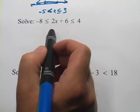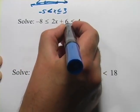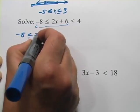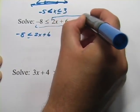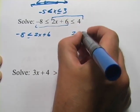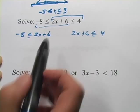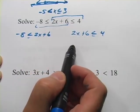Well the first step is to break this into two pieces. The first piece is this one, negative 8 is less than or equal to 2x plus 6. And the second piece is this one, 2x plus 6 is less than or equal to 4. So that's really two problems and this is how we break them apart first.